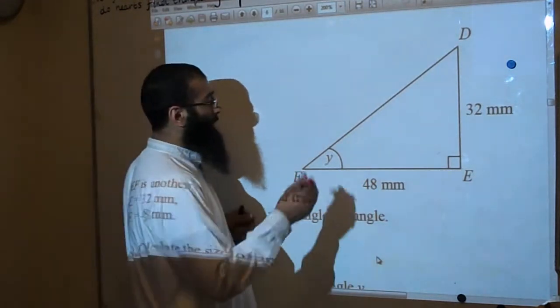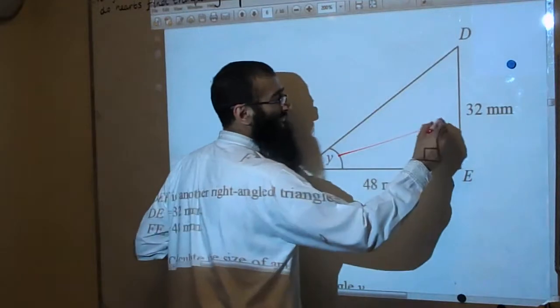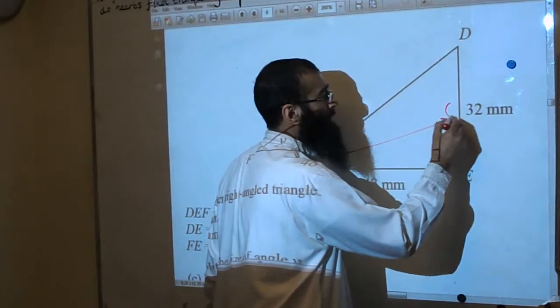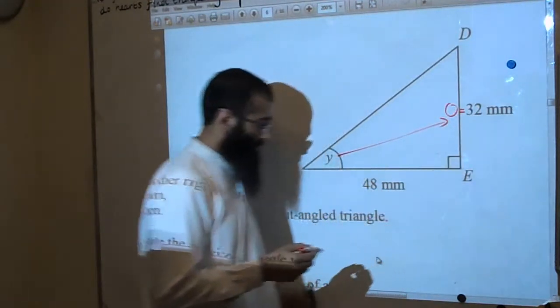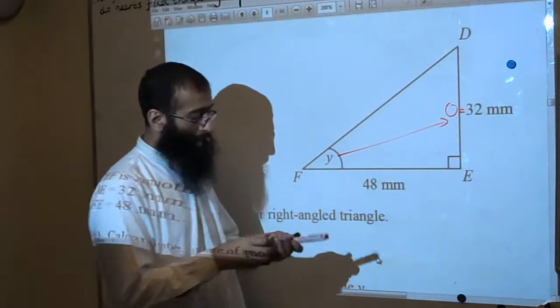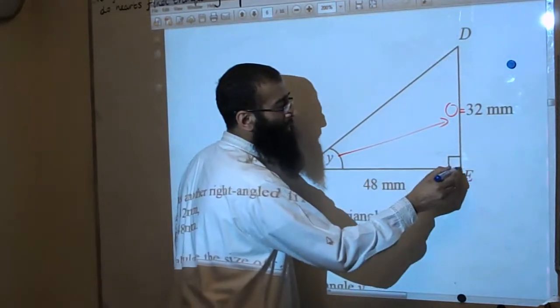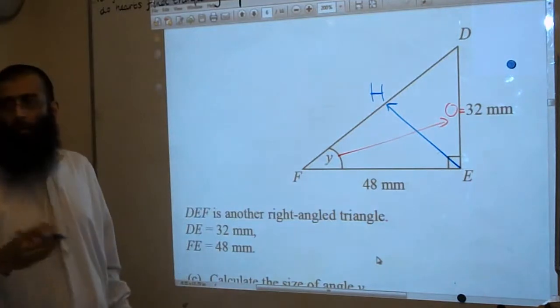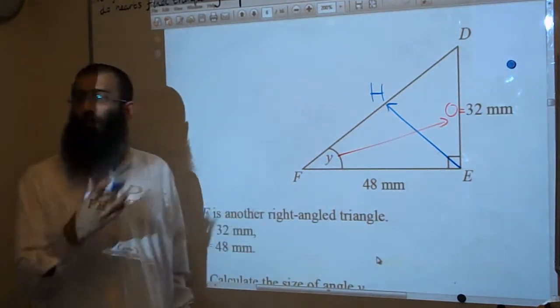The first thing that we do is label up the diagram. And we say opposite the angle involved, the angle is called the opposite. Now, next. Opposite the right angle always is the hypotenuse. For the hippopotamus. Sorry, the hypotenuse.